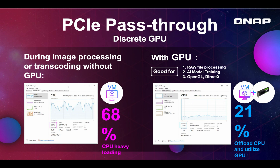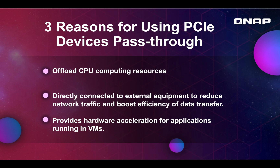Also, you can do more with your VM because your VM will have that hardware acceleration, so there'll be more apps that you could run effectively, like Adobe Premiere. And if each VM requires less CPU power, you could potentially run more VMs on your NAS. Some reasons for wanting to use PCIe Pass-Through are to offload CPU computing resources, to directly connect to external equipment, to reduce network traffic, boost efficiency of data transfers, and provide hardware acceleration for applications running in VMs.